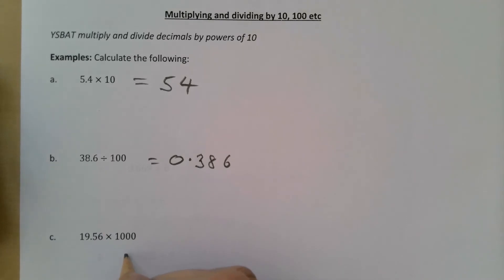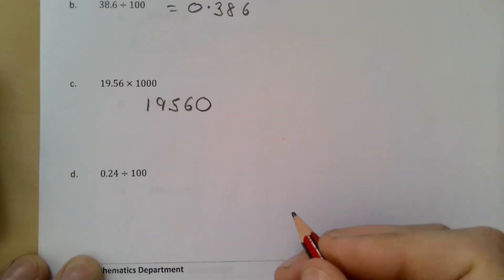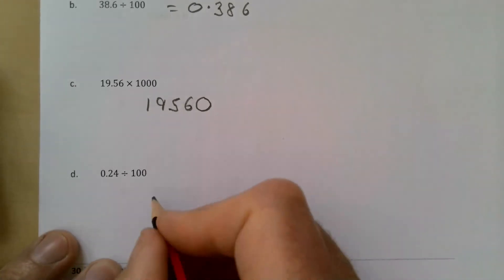up three, so it's 19,560. That would be it moved up two, so we need to move it up another one. And then finally, 0.24 divided by 100, it's going to be 0.